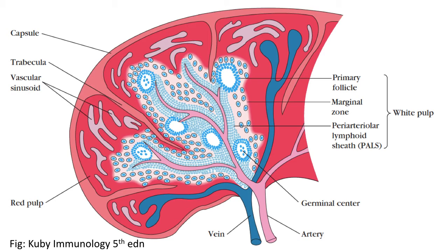The activated T helper cells in turn activate the B cells. These activated T and B cells migrate to the primary follicles, converting the primary follicles into the secondary follicles. The difference is that the primary follicle contains irregular aggregates of B cells, but the secondary follicle is one in which all the B cells arrange themselves in concentric circles, leaving a place called the germinal center at the center.